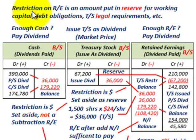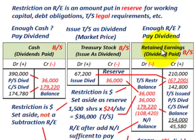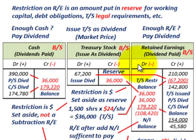Now we concentrate on the restriction on retained earnings — an amount put in reserve for working capital, debt obligations, or in this case treasury stock, as required by law. The accounts involved are cash, the treasury stock equity account, and retained earnings. When paying cash dividends, we must ask: do we have enough cash to pay the dividend, and do we have enough retained earnings? A reduction in retained earnings corresponds with a reduction in cash when paying cash dividends.